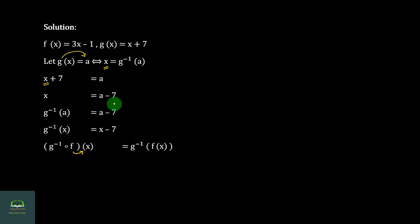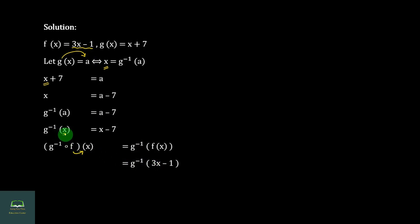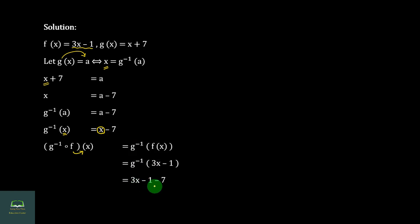Using the formula 3x minus 1: if you have 3x minus 1, then substituting gives 3x minus 1 minus 7, which is 3x minus 8.